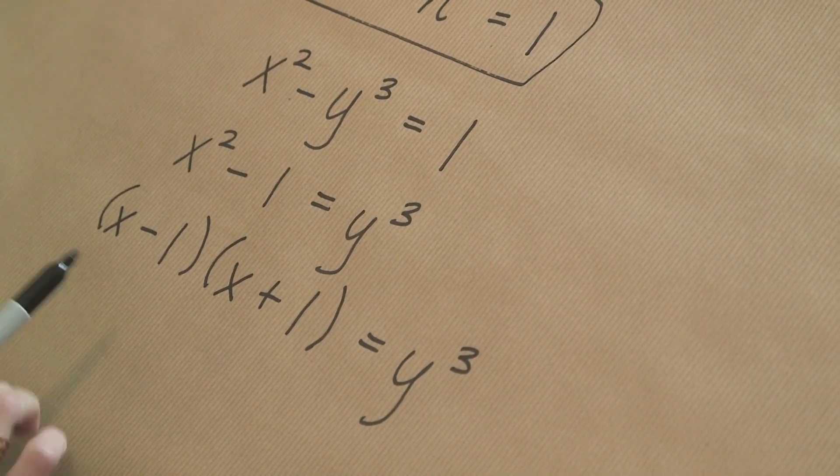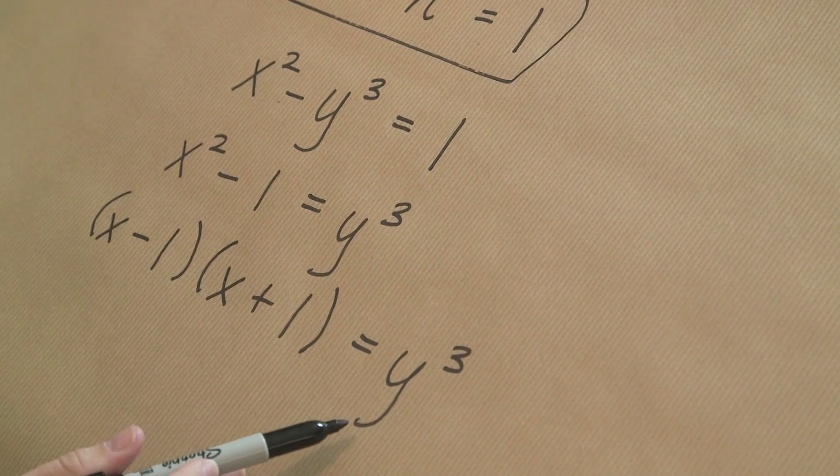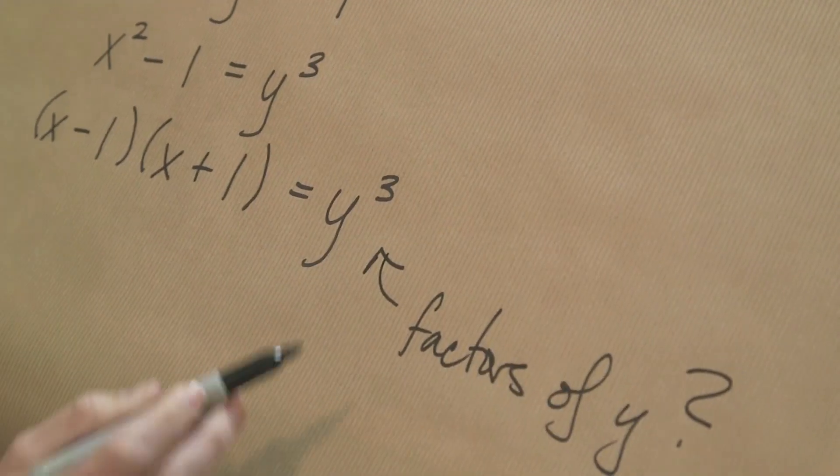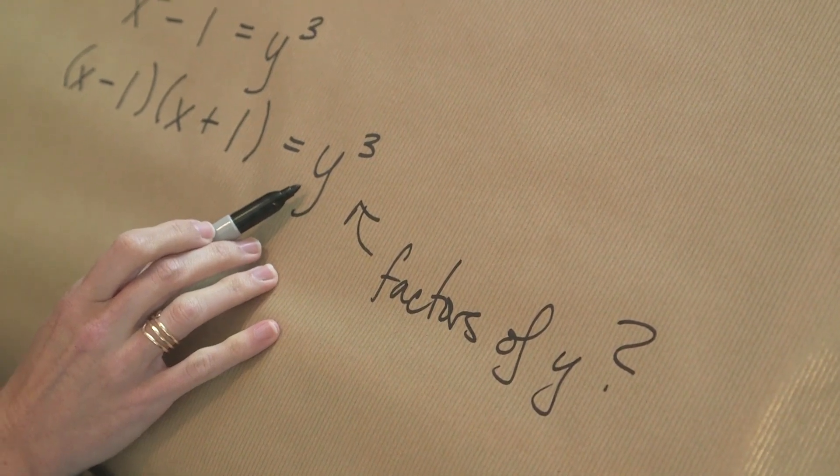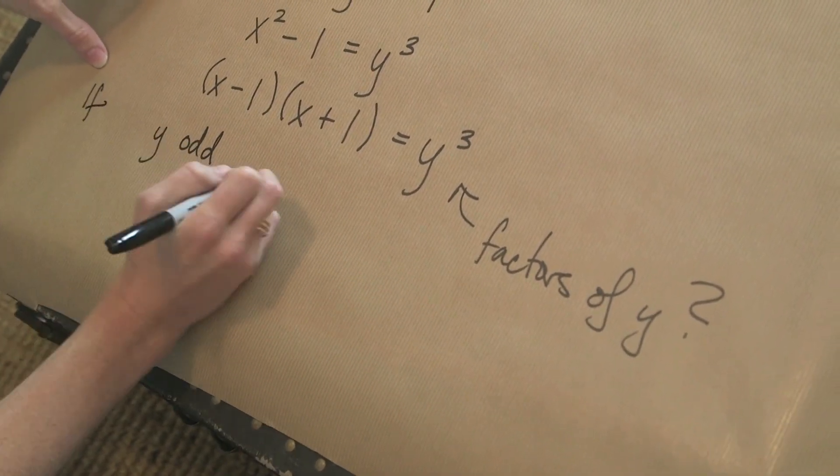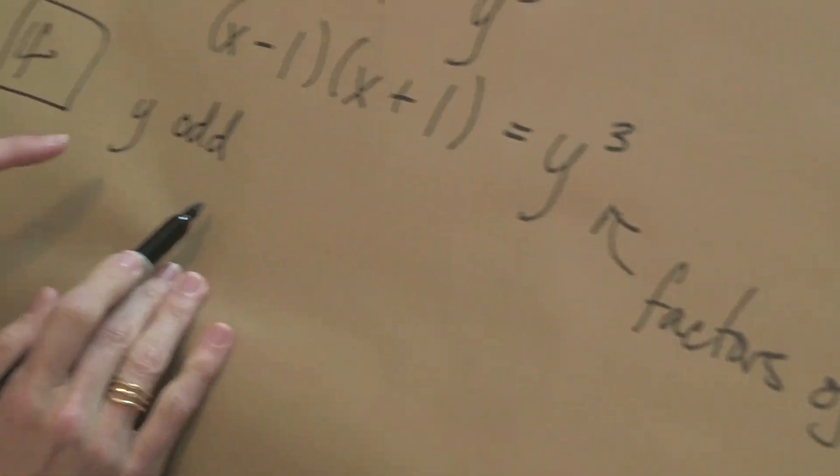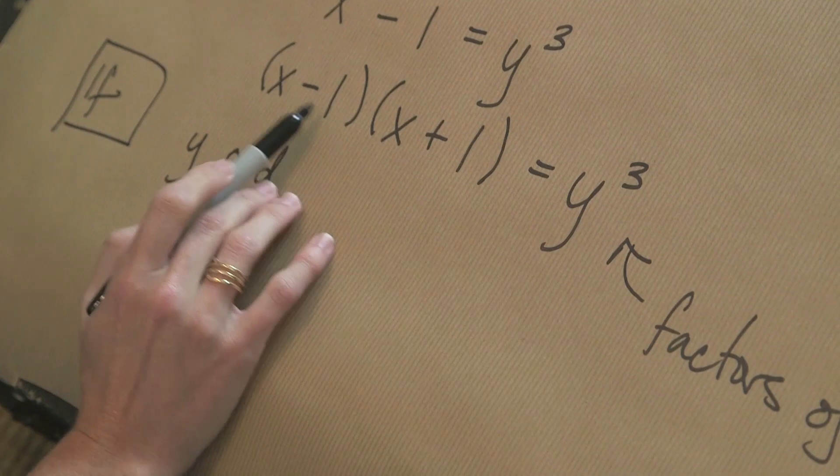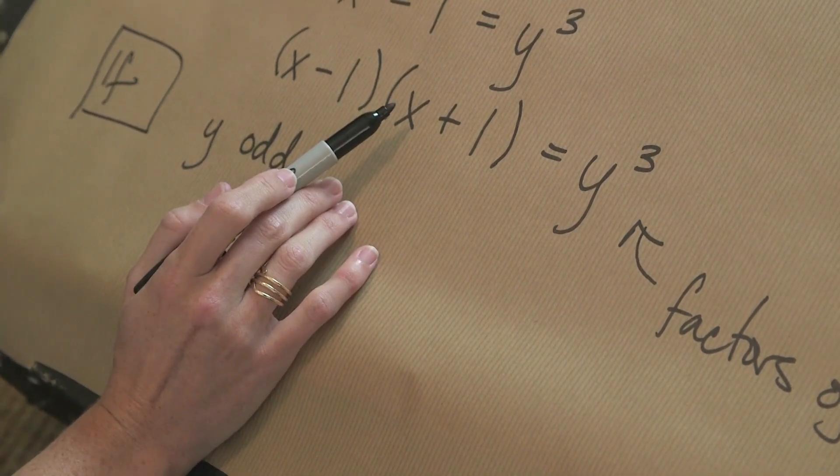So now why is this better? Why do I find out whether or not this has solutions? Here's the idea: the factors of y. Any number that divides y has got to divide one of these two things. And so, let's ignore 2 for the moment, let's pretend that y is odd, so 2 doesn't divide y.